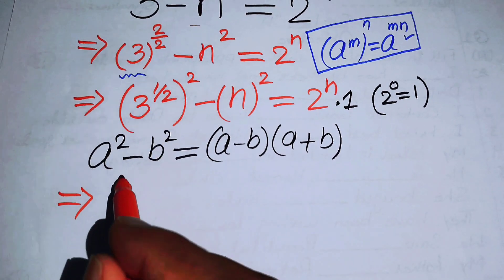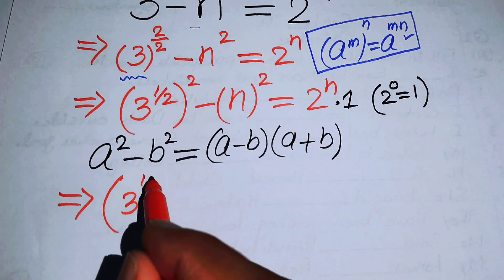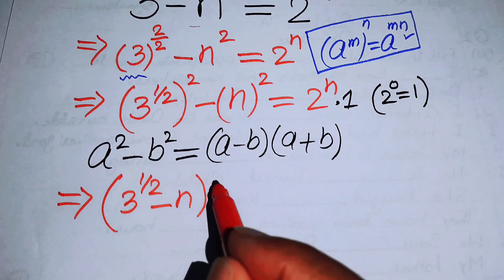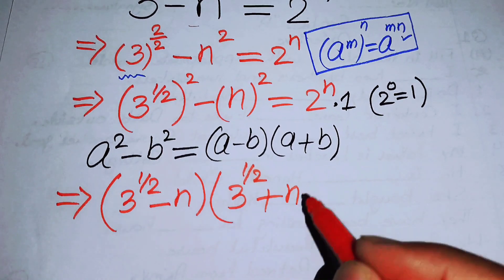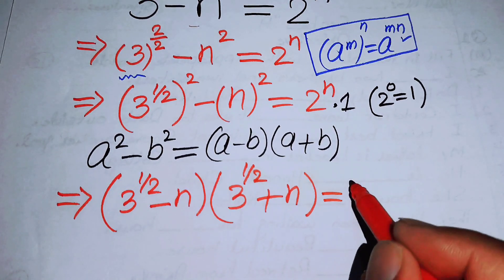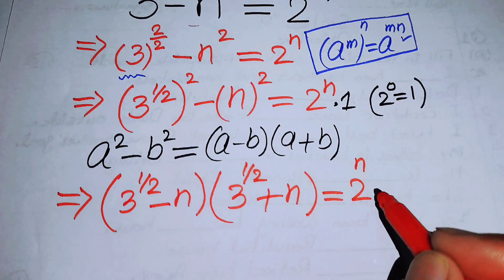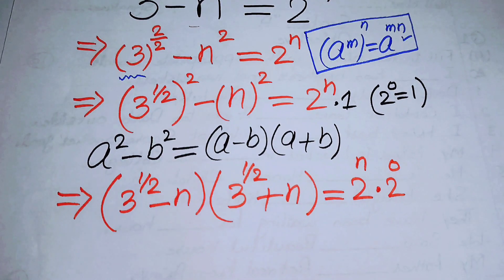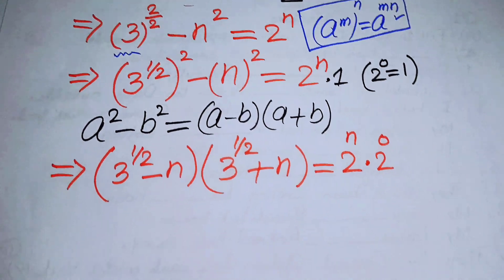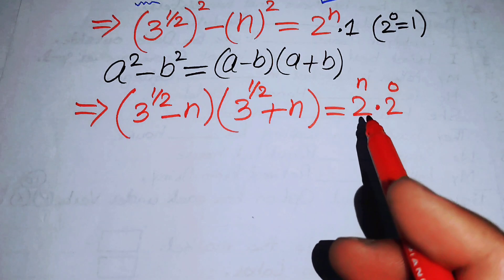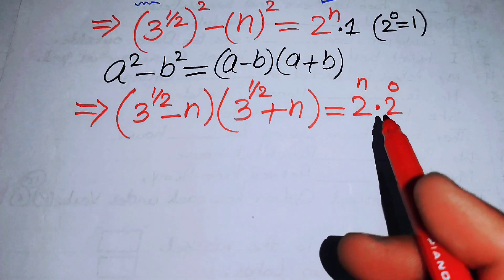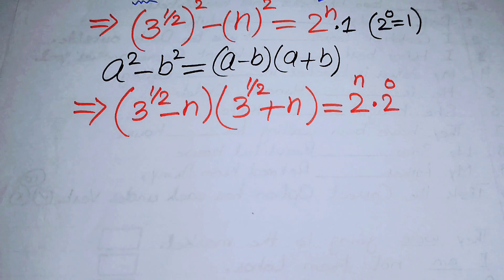Applying the difference of squares formula to the left hand side, we get: (3 to the power of 1/2 minus n) times (3 to the power of 1/2 plus n), and this equals 2 to the power of n multiplied by 2 to the power of 0. Now both sides have two factors being multiplied together, so we can compare both sides.